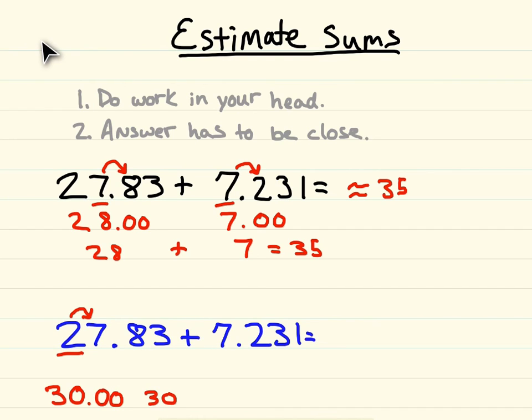Now let's look at the 7.231. Underline the 7, look at the 2. That 2 is going to make the 7 rest, so that just stays a 7 as well, because the zeros don't mean anything.